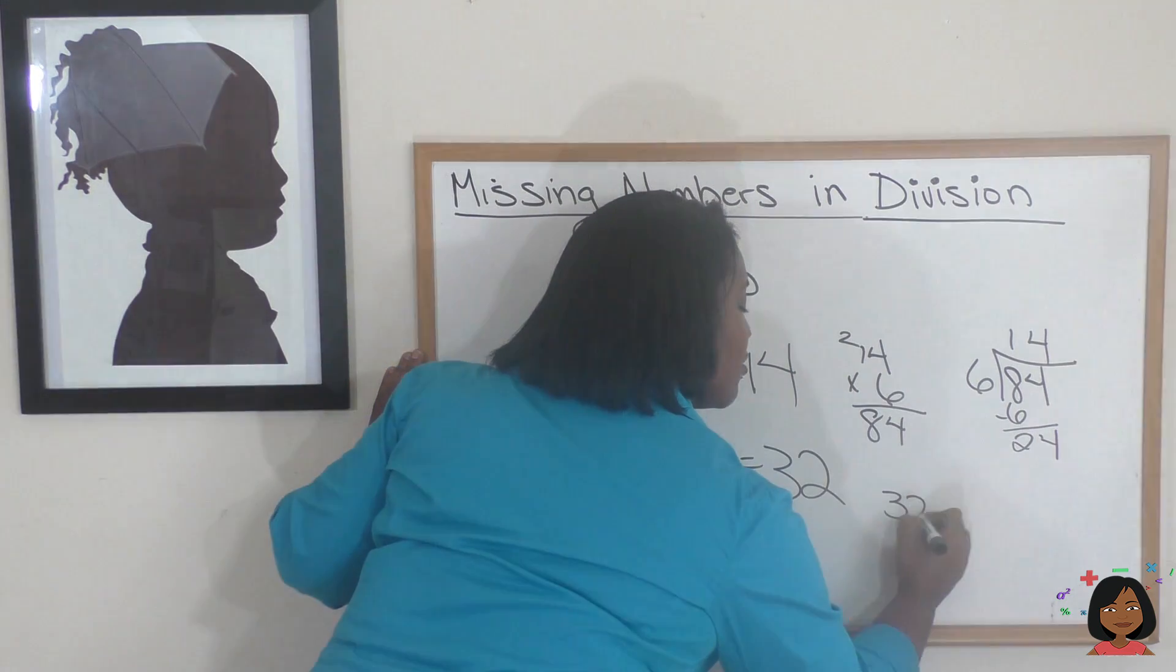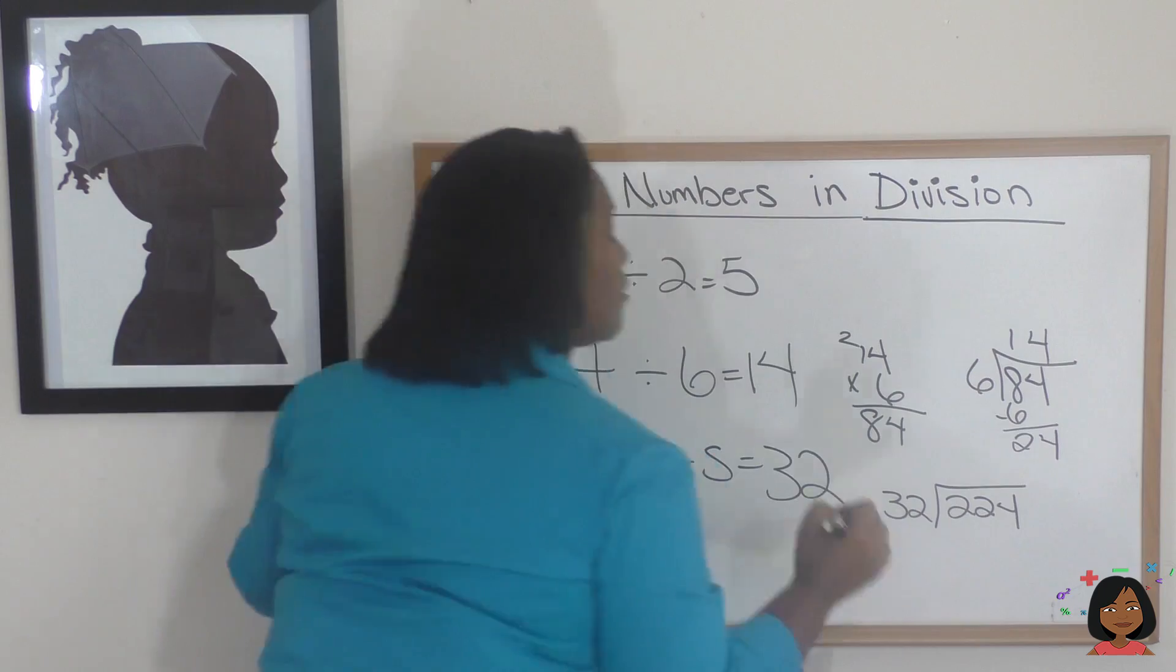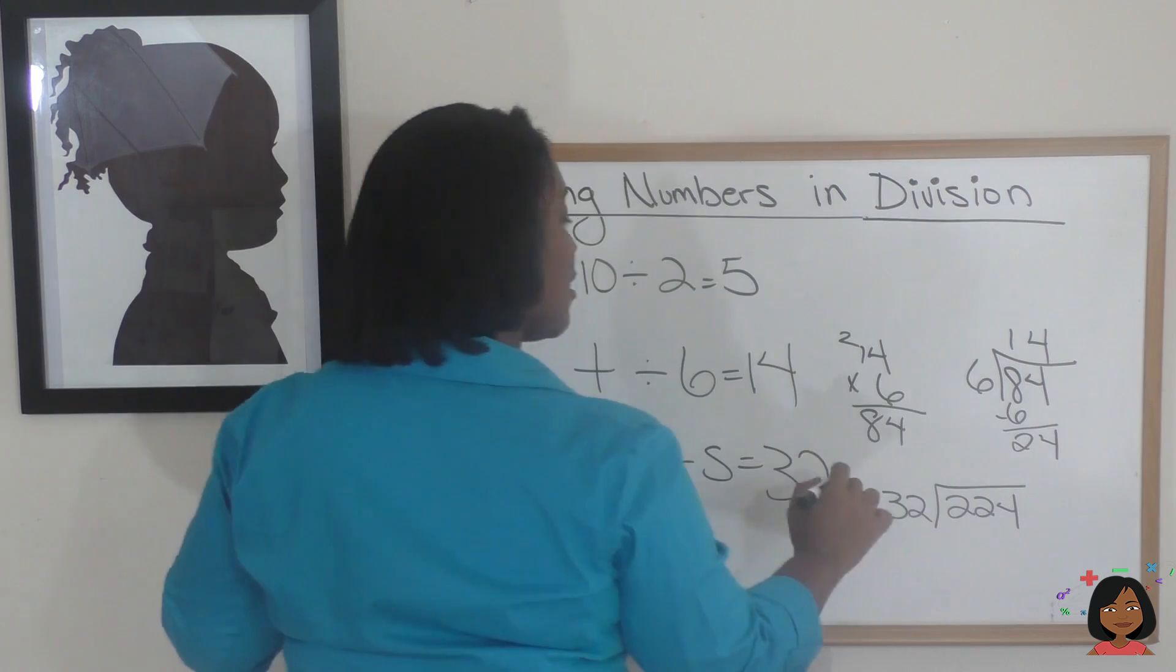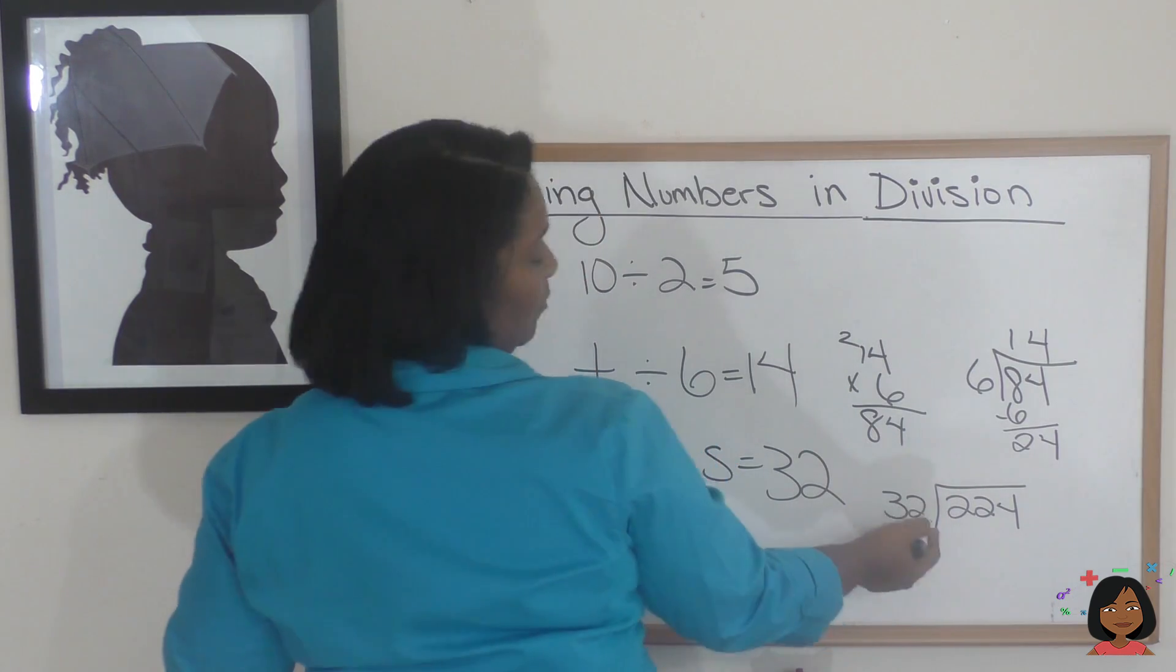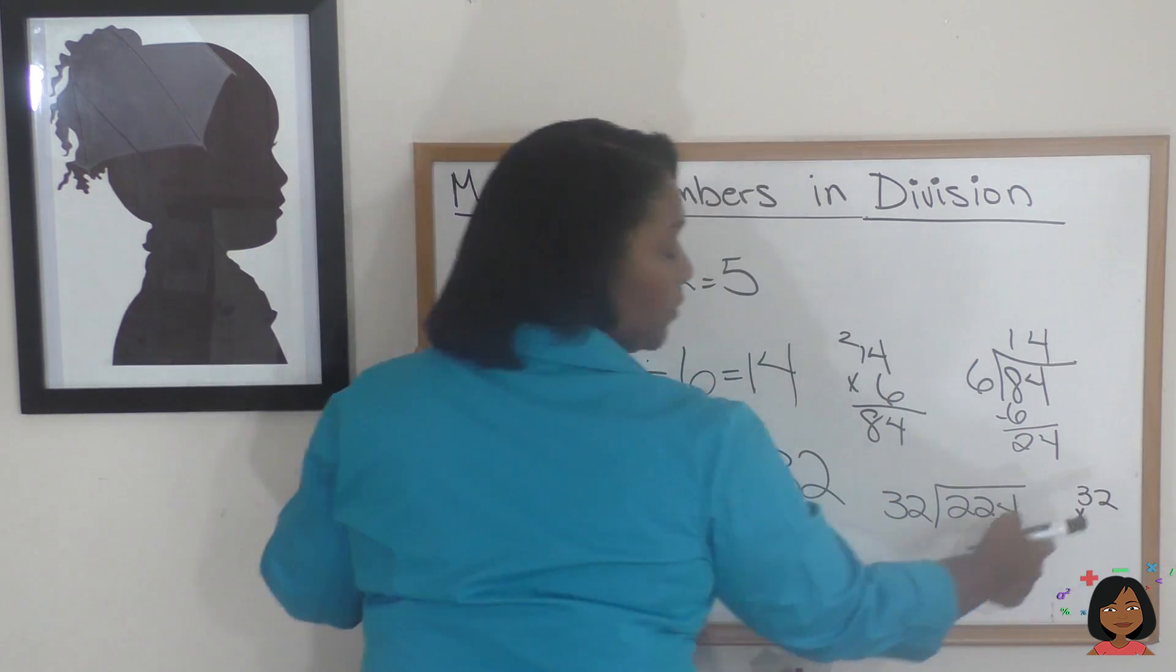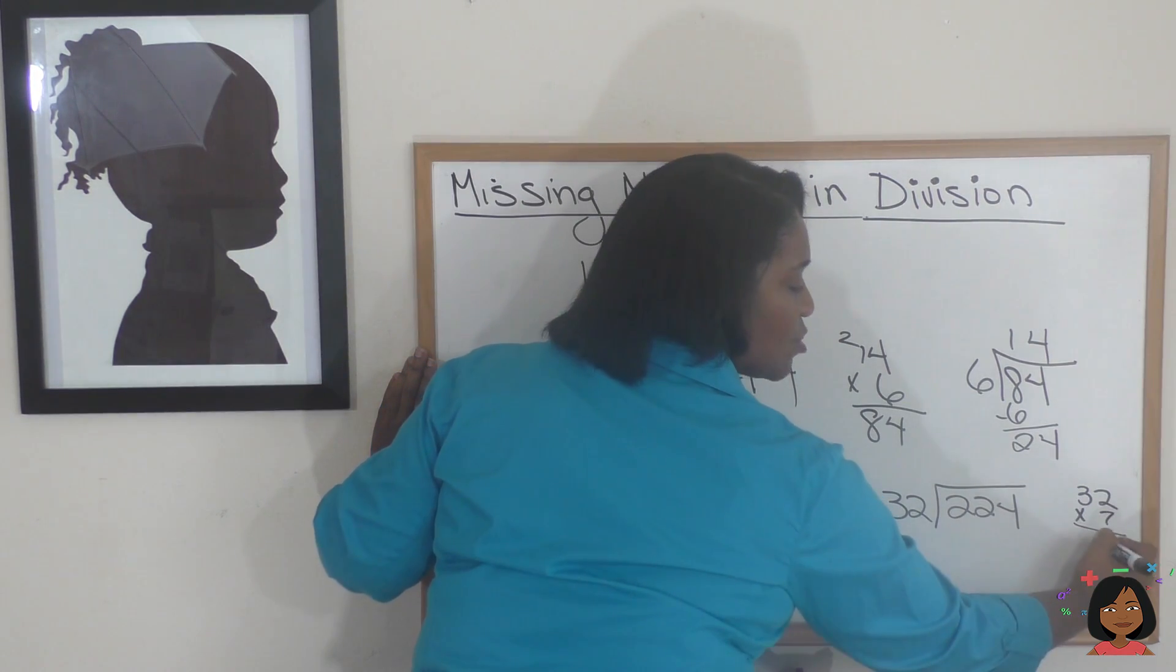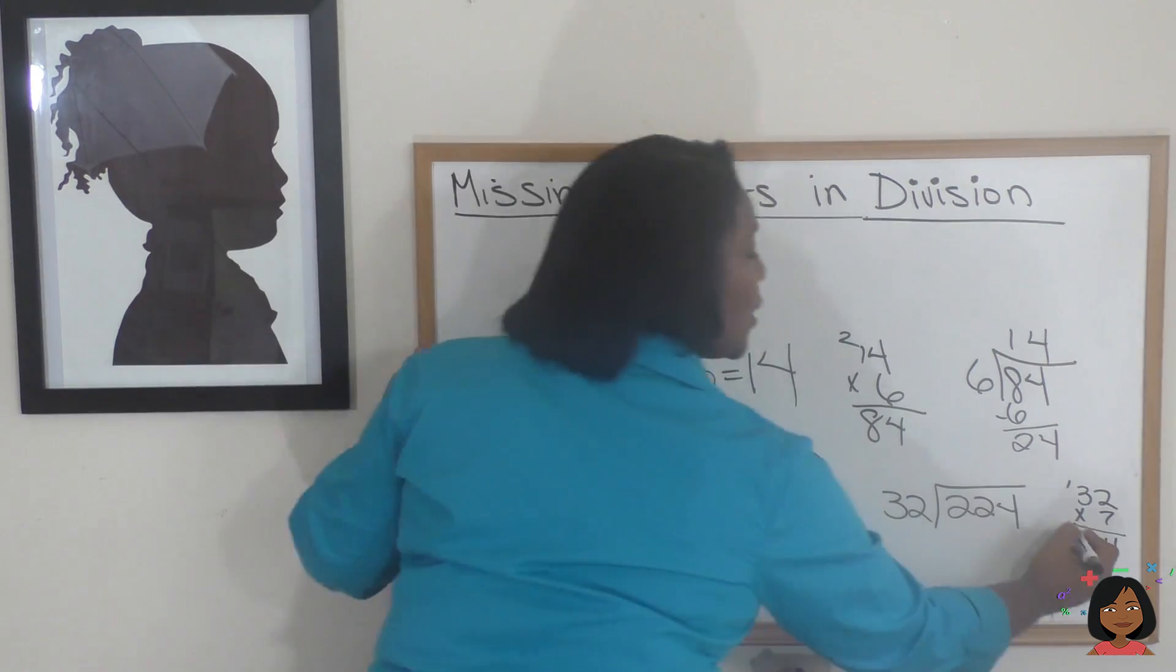So let's do it. 32 into 224, and our missing number is 32 times. Let's see what that would be. I like to do my math over to the side if I don't know it. Would it be 6, 7? Let's try 7. We think it's going to be too much. 7 times 2 is 14, 7 times 3 is 21, and 1 is 22. Look at that!